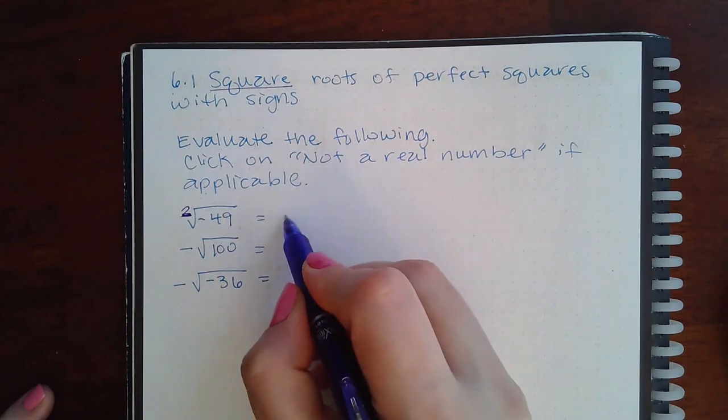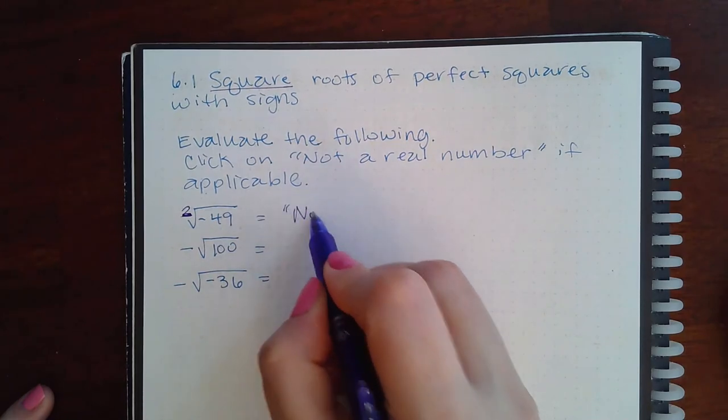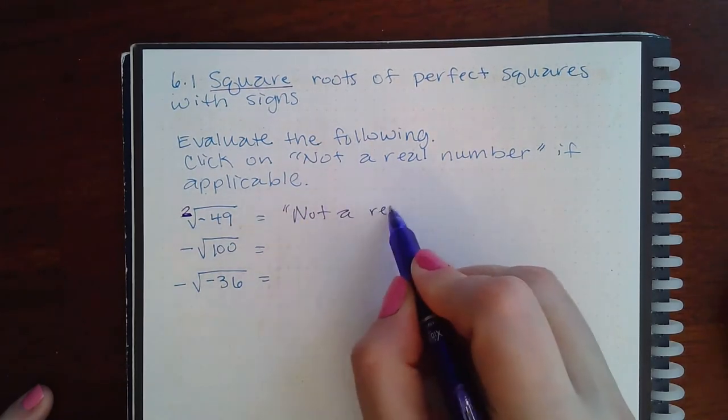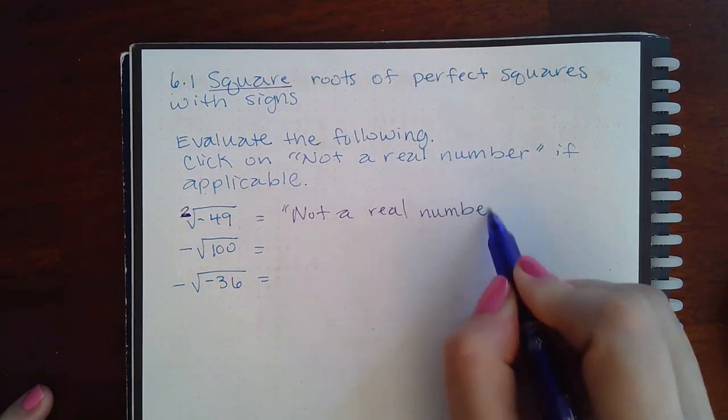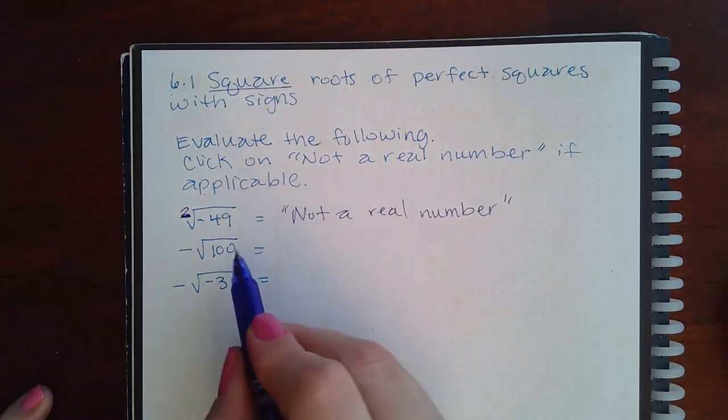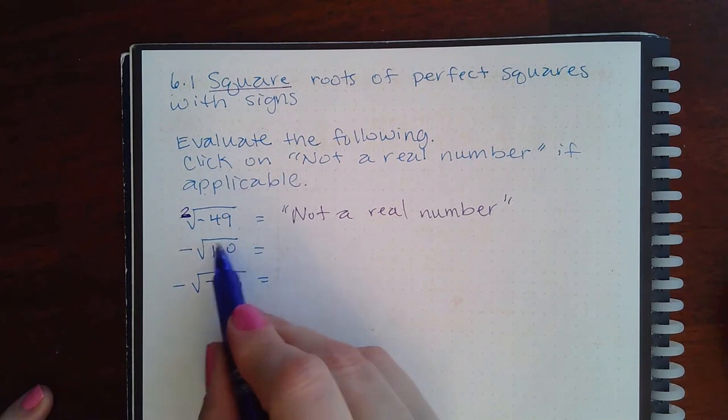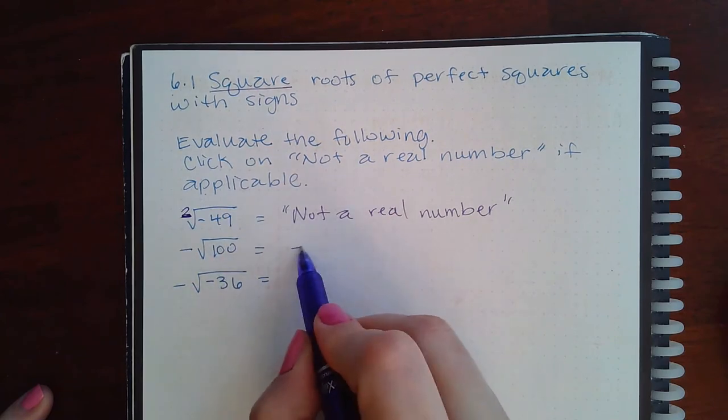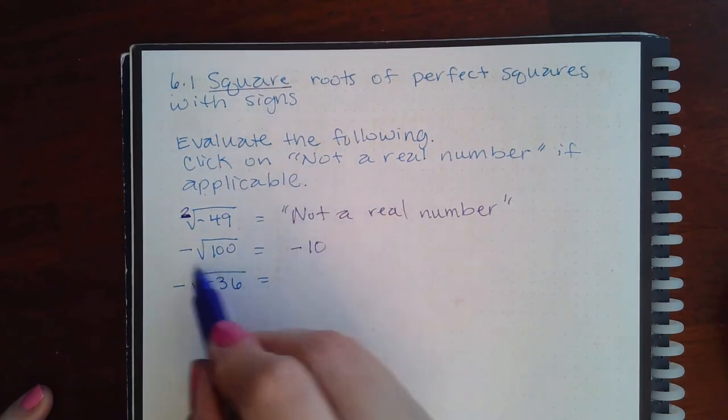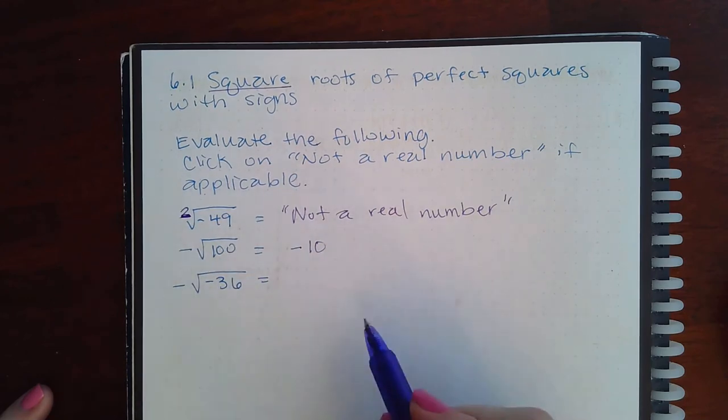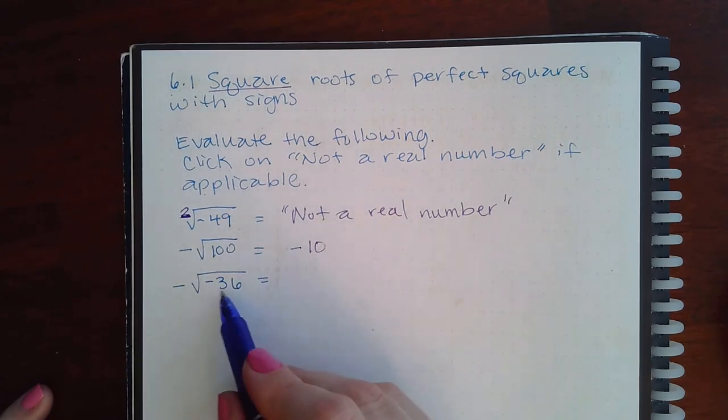Here my radicand is positive so I can take the square root of 100 and that's 10. This negative just carries along.